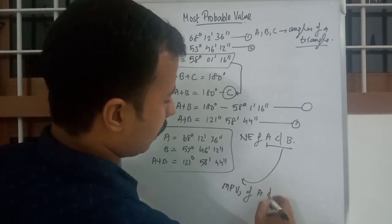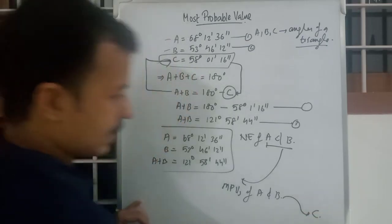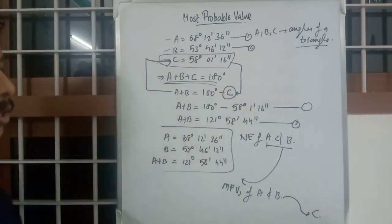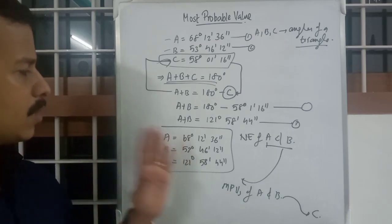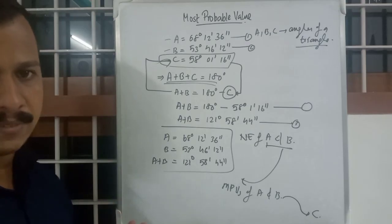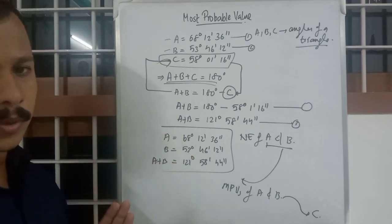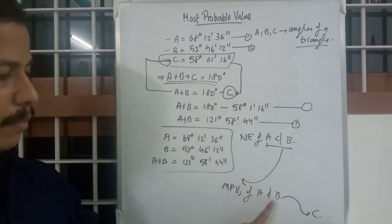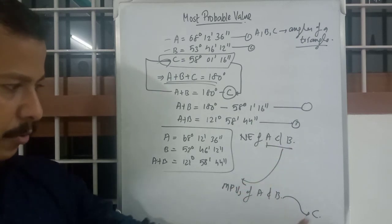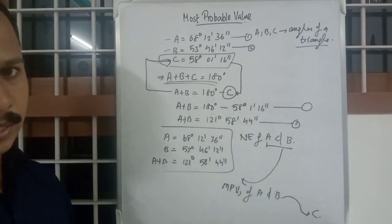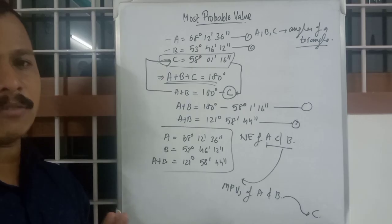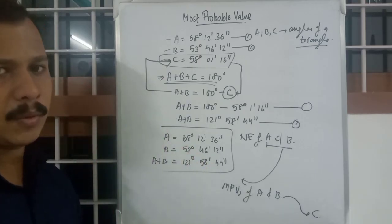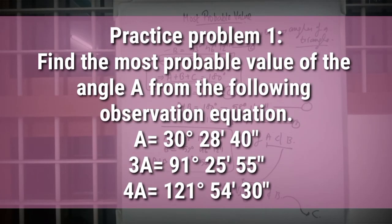Calculate the MPVs of A and B, and then find C using A + B + C = 180°. The procedure is simple — multiply by the coefficient and the weight; since weights and coefficients are all 1 here, just add the values to get the normal equations of A and B. Substitute into your scientific calculator to get the MPVs. This is how you calculate indirect observations with equal and unequal weights.